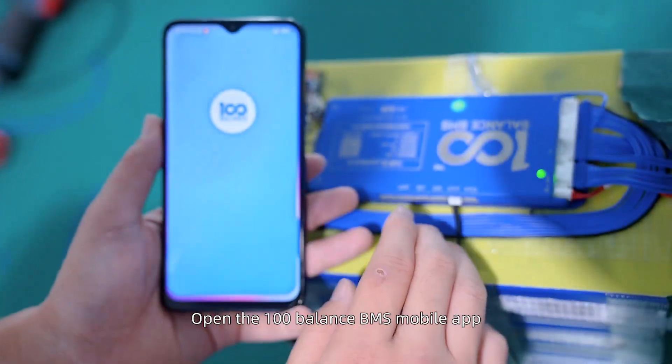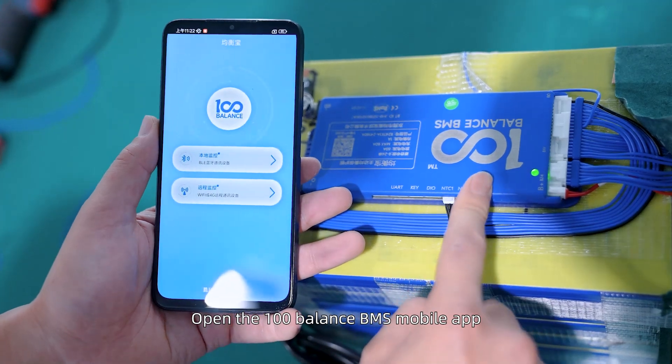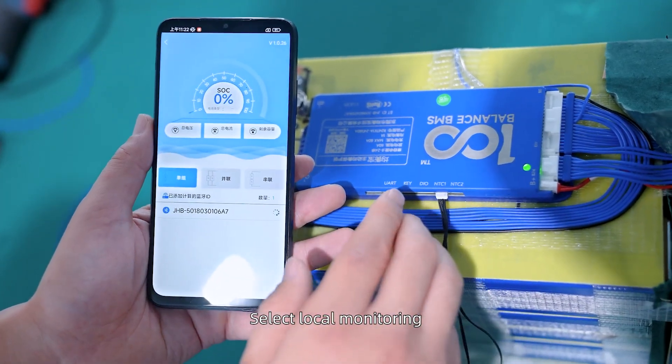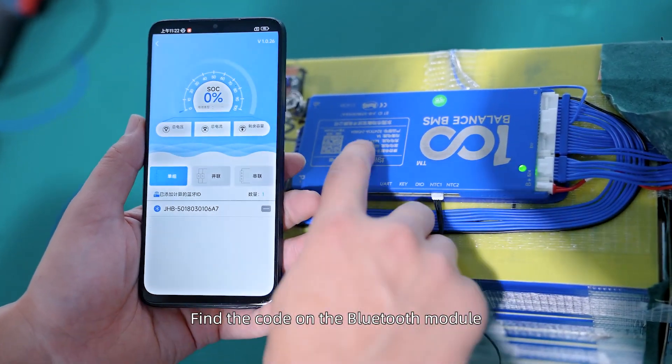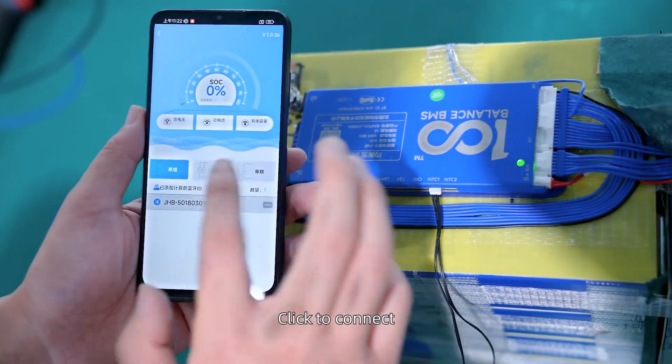Connect the Bluetooth to set parameters. Open the 100 Balance BMS mobile app and select Local Monitoring, find the code on the Bluetooth module, and now click to connect.